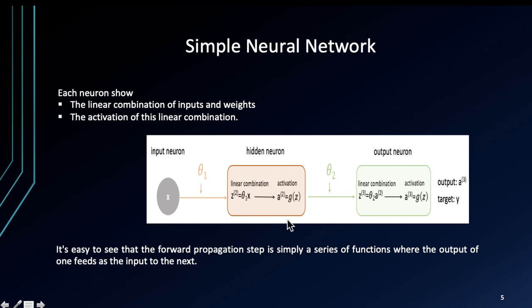It is easy to see the forward propagation step is simply a series of functions where the output of one feeds into the input of next. So input, linear combination of weights, activation function, we get the output neuron. We get the output a and the target or response variable is y.